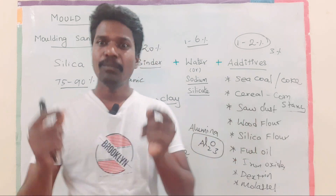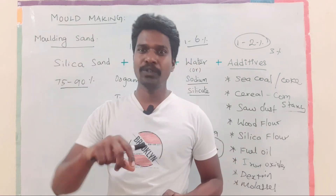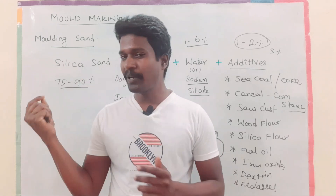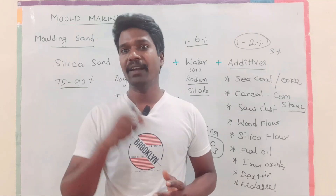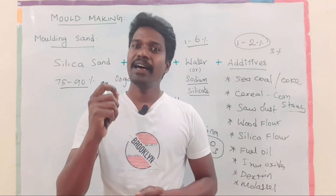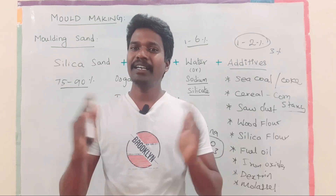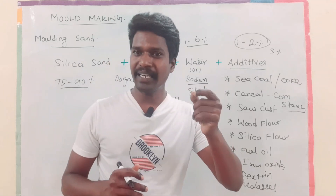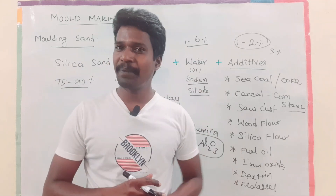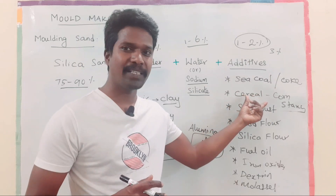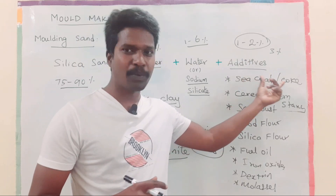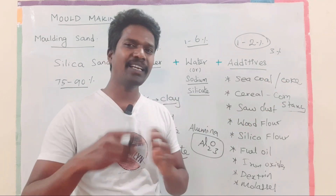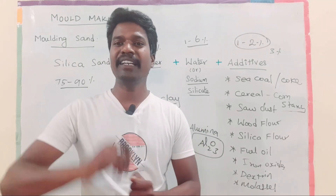The molding sand absorbs heat from the molten metal. Silica sand expands when it absorbs heat. If the sand particles cannot expand freely, stress develops, leading to bending and buckling defects in the casting.